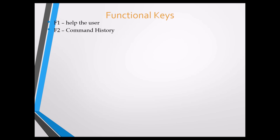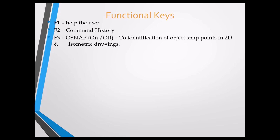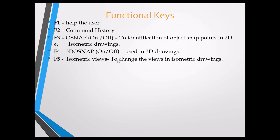F3 is OSNAP (Object Snap), toggled on or off. It identifies endpoints, center points, and midpoints of an object — used for identification of snap points in 2D and isometric drawings. F4 is 3D OSNAP, similar to F3 but used only for 3D drawings. When OSNAP is on you can find points; when off you cannot find points in the drawing.